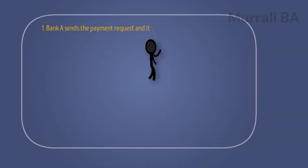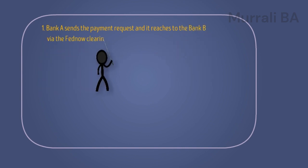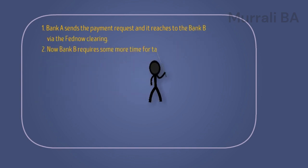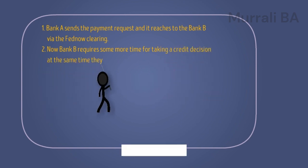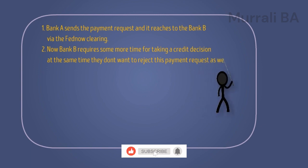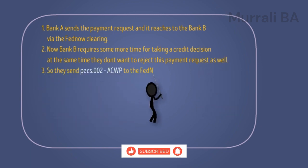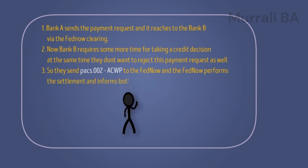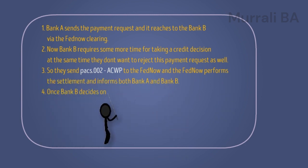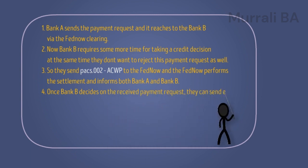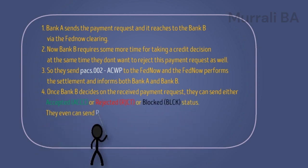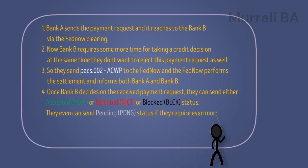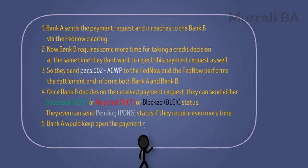Let's summarize this concept. Bank A sends the payment request and it reaches Bank B via FedNow Clearing. Bank B requires more time for taking a credit decision but at the same time they don't want to reject the payment request. So they send PACS 002 ACWP to FedNow, and FedNow performs settlement and informs both Bank A and Bank B. Once Bank B decides on the received payment request, they can send either accepted, rejected, or blocked status — or even pending if they require more time. Bank A keeps the payment request open until the final status is received from Bank B.